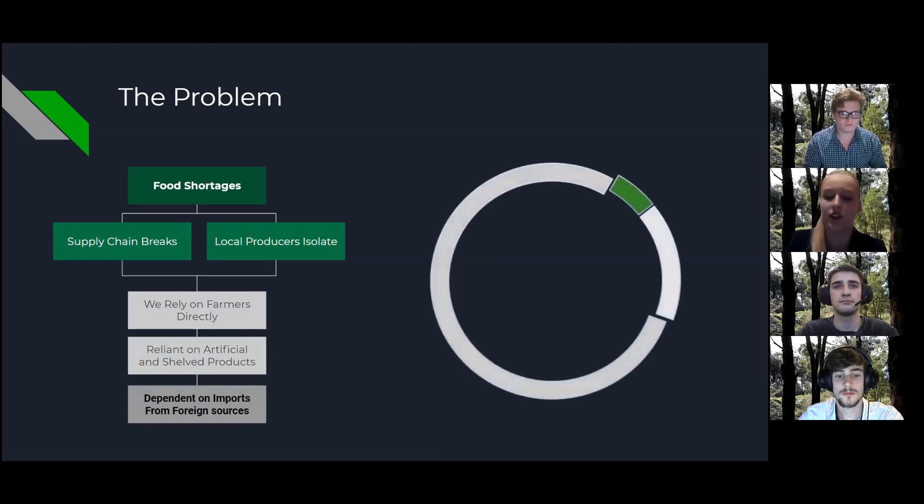For our research, we decided to focus on Australia itself, and out of Australia's approximately 7.68 million square kilometres, only 5.99% of this is arable, and only 3% of this is still available.